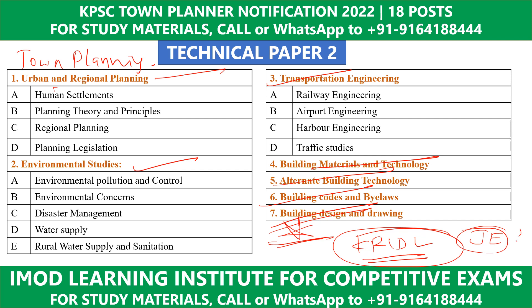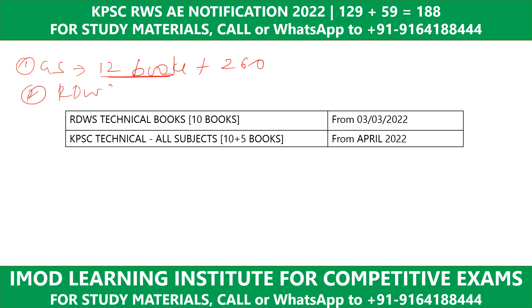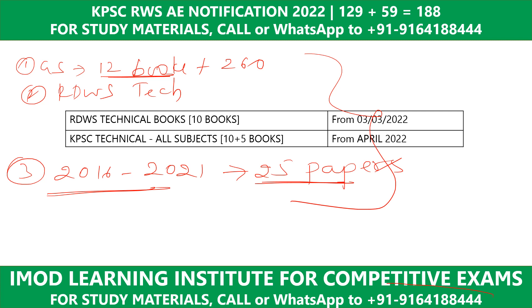Next, remaining items are KRIDL Detailed Notification and RDWS JE Paper 2. As of today: General Studies complete package is available — 12 books plus 260 classes, or books only. RDWS EIE Technical Books are available along with question banks from 2016 to 2020 exams — total 25 papers, both technical and general papers. If you are interested, call or WhatsApp. Thank you.